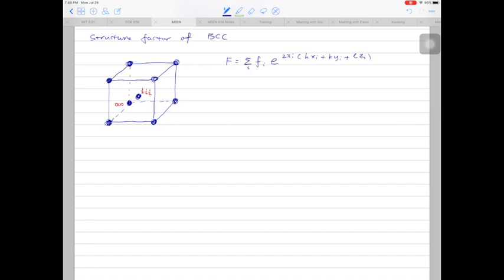Since we have only one type of atoms in this unit cell, so fi we can just simply write down as f. And when i is equal to 1, or let's look at the first set of atoms, so xi is equal to zero, yi is equal to zero, zi is equal to zero.